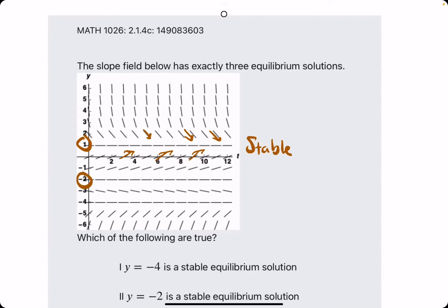Negative 2. These lines are going away from it, above it, and they're going away from it, below it. So, this is unstable.